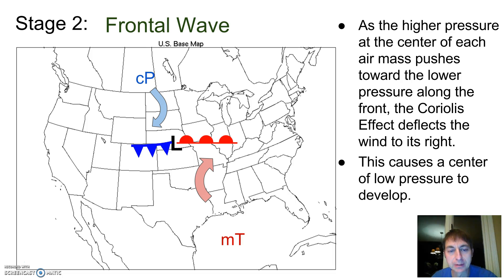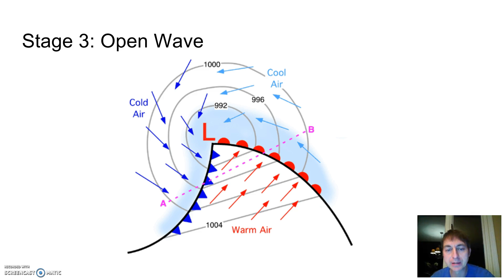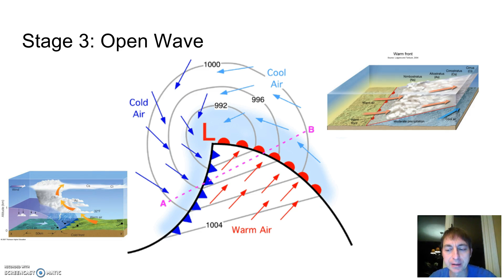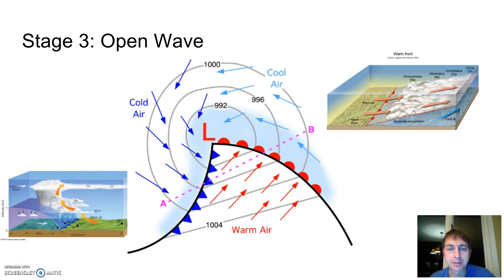Over time this continues to change. In stage three you notice the shape looks different — the warm front hasn't moved very much, yet the cold front has moved significantly. Recall why: cold air, being more dense, more effectively pushes through the warm air, so the frontal boundary moves faster. Off to the west along the cold front we might expect heavy rain or thunderstorms, whereas steady precipitation would be associated with the warm front to the east. So we have two different fronts that have developed out of the initial stationary front.